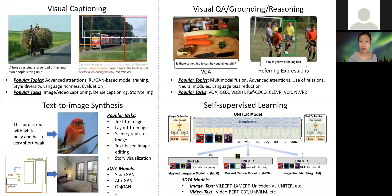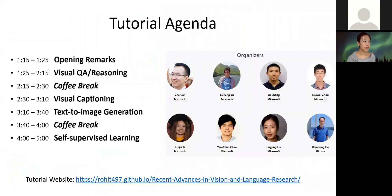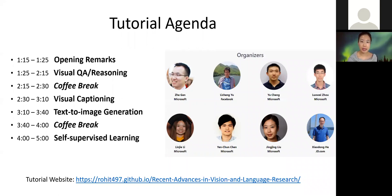In this tutorial we will cover a wide range of vision and language research topics including visual captioning, visual QA and reasoning, text-to-image generation, and self-supervised learning for multi-modal pre-training. We divide this tutorial into four sessions. We will start with a visual understanding session followed by a coffee break, then two sessions on generation tasks — text-to-image and image-to-text — and finally a session on self-supervised learning for multi-modal pre-training.